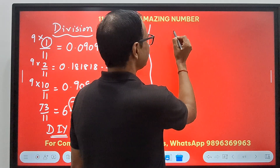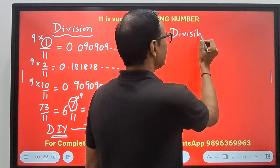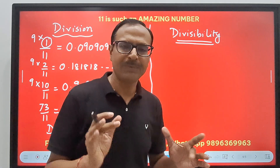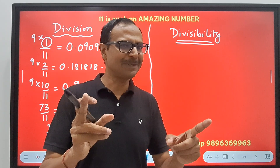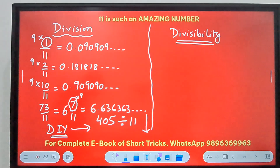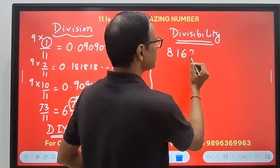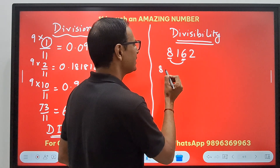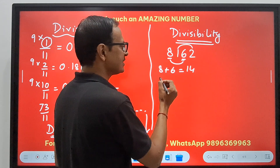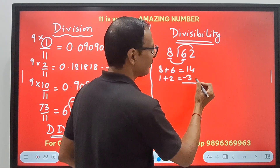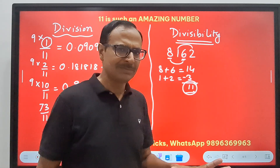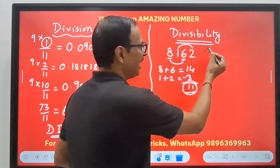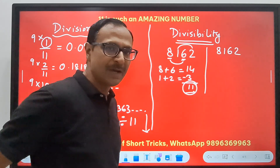Coming on to another one: let's take divisibility. How do you check whether a particular number is divisible by 11 or not? At school level, we study the even-odd method. Suppose you have to check whether 8162 is divisible by 11: take the odd-positioned digits 8 and 6 — their sum is 14; take the even-positioned digits 1 and 2 — their sum is 3. The difference is 14 − 3 = 11, which is divisible by 11, so 8162 is divisible by 11.